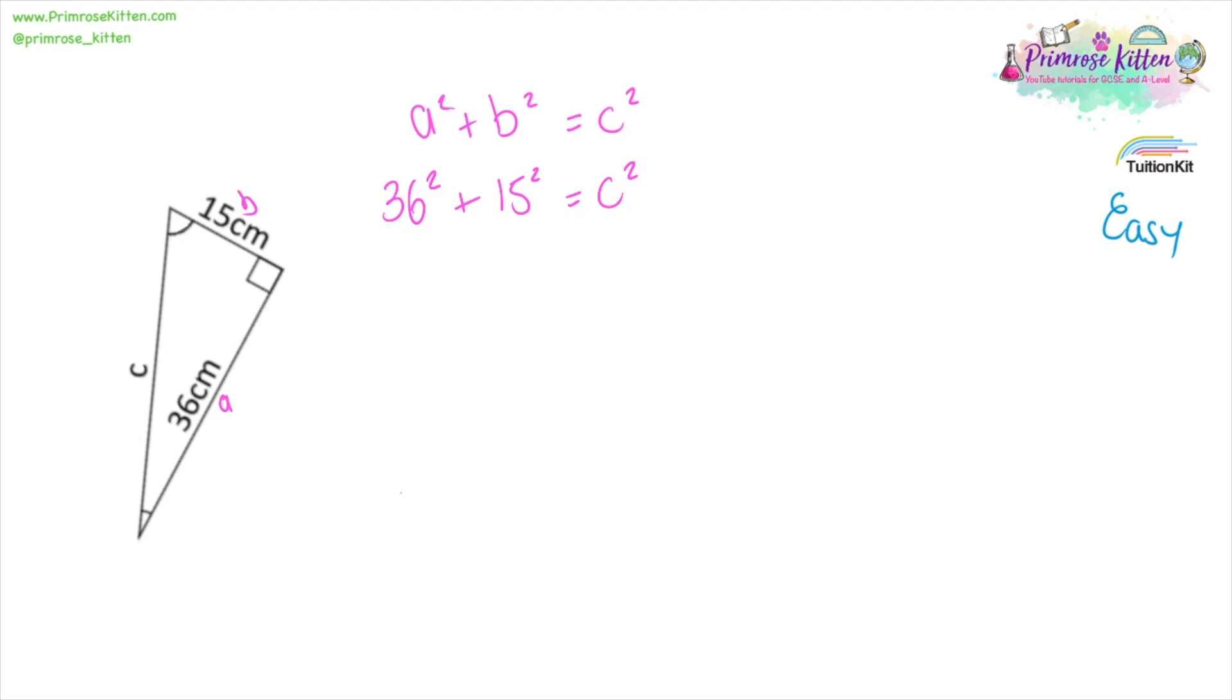We can use our calculator to tidy this up. 36 squared is 1,296 plus 15 squared, which is 225, will equal 1,521. Now remember, this 1,521 is equal to c squared. So we need to square root things to get the answer for c, and that gives us 39.